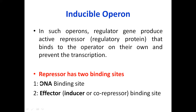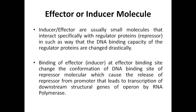In the inducible operon, the molecule that affects the binding of the repressor on the operator is known as an inducer. In normal conditions, the repressor binds the operator and blocks transcription. When an inducer binds to the repressor's effector site, it changes the repressor's conformation so that it can no longer bind the operator — and transcription is released.